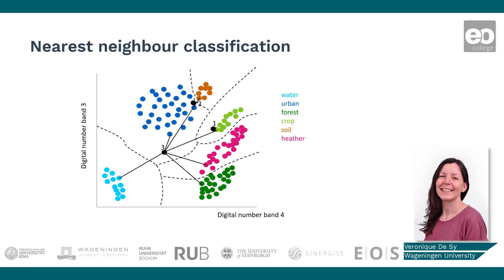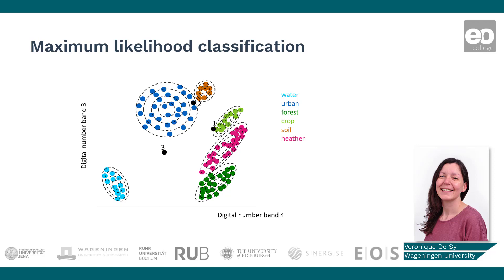Maximum likelihood classification, a parametric algorithm, assumes that the statistics for each class in each band are normally distributed, and calculates the probability that a given pixel belongs to a specific class. Each pixel is assigned to the class that has the highest probability — that is, the maximum likelihood. On the slide you can see that for each cluster, ellipses are drawn around the mean based on a normal probability distribution. The more remote from the mean, the smaller the probability of finding a point that belongs to this cluster. If the highest probability is smaller than a threshold you specify, the pixel remains unclassified, for example for pixel 3 in the slide.